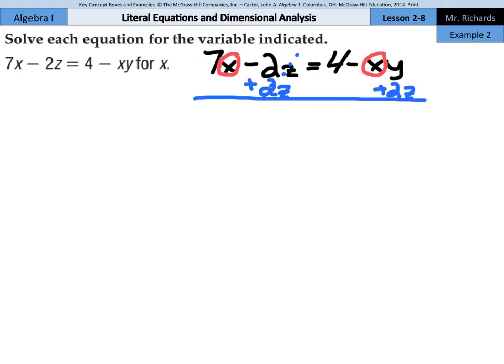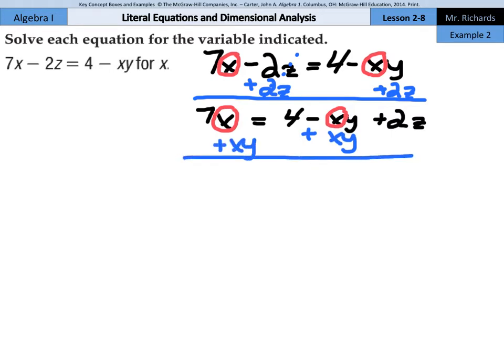And so I now have 7x equals 4 minus xy plus 2z. And right now my x's are still there in here. And I need to move this minus xy over to the left side. I can't just move the x right now since the y is still attached. So right now I need to add xy to both sides. And so I have 7x plus the xy, and that equals the 4 plus 2z.